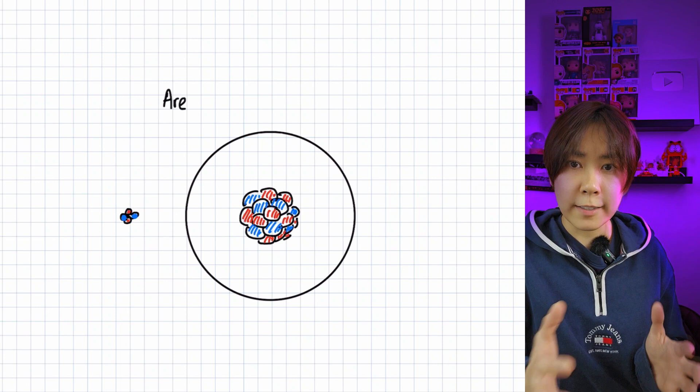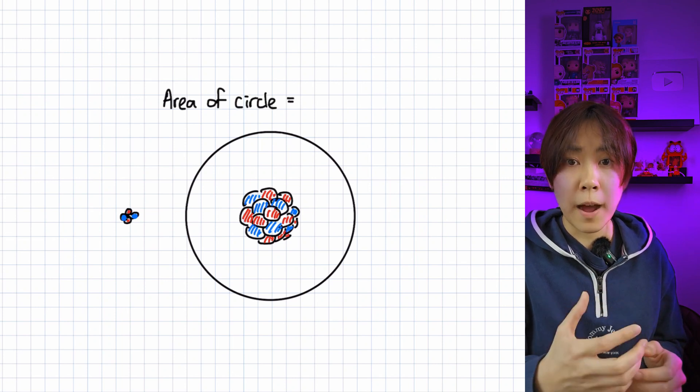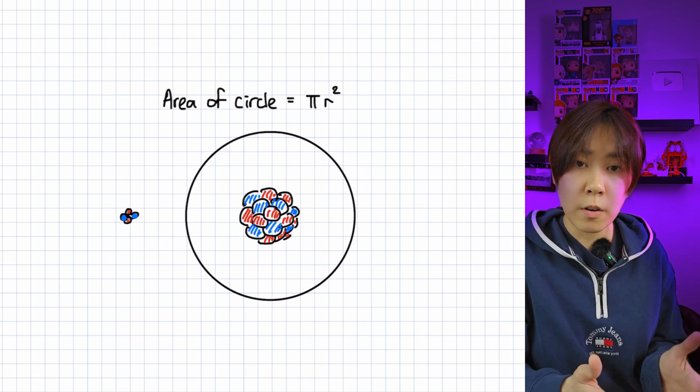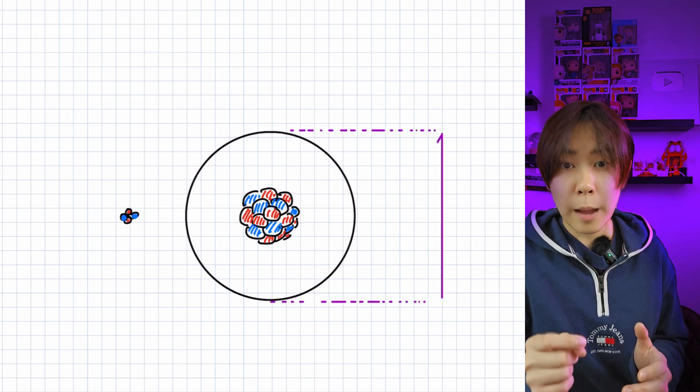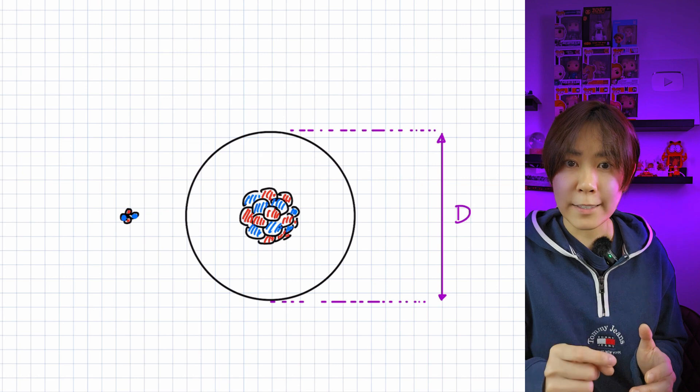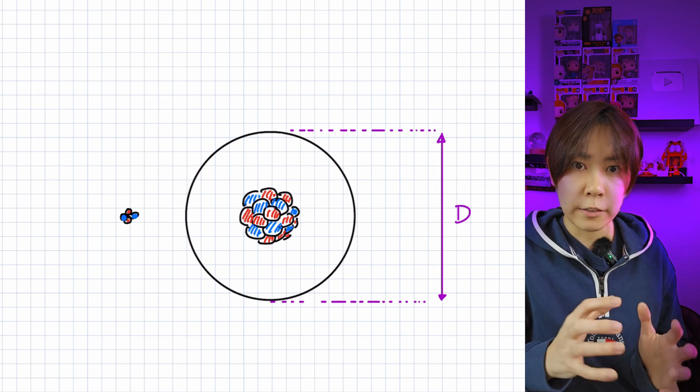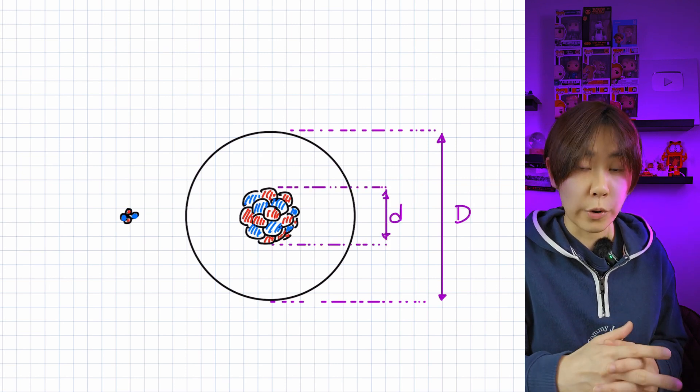Let's think about the atom's cross-sectional area. You'll remember that the area of a circle is pi times the radius squared or pi times the diameter over 2 all squared. I'm going to label the diameter of the atom capital D and the diameter of the nucleus lowercase d.